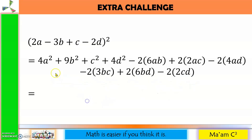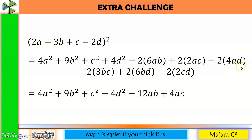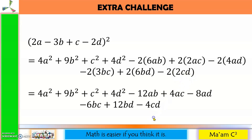Let us simplify this. Let us rewrite the first four terms. Negative 2 times 6 is negative 12ab. Positive 2 times 2ac is positive 4ac. Negative 2 times 4ad is negative 8ad. Negative 2 times 3bc is negative 6bc. Positive 2 times 6bd is positive 12bd. And negative 2 times 2cd is negative 4cd. So here is our answer for the square of this multinomial.